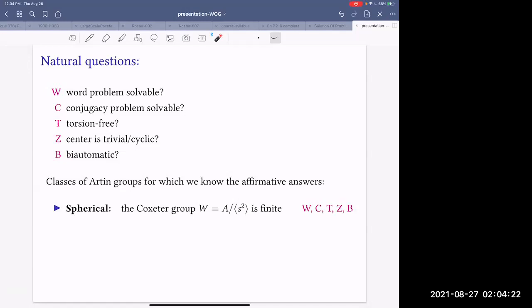we know answers to these questions. For example, for spherical groups, these are exactly the groups such that the corresponding Coxeter group is finite. We add squares of all generators and that's the Coxeter group, corresponding to the given Artin groups. We know answers to all these questions and they are all affirmative, positive.